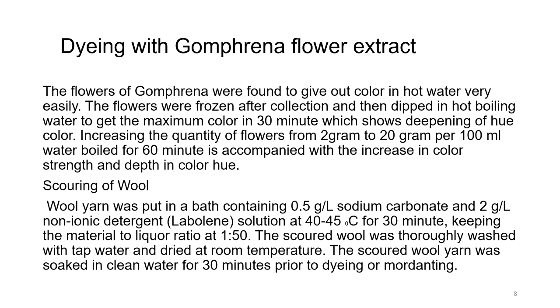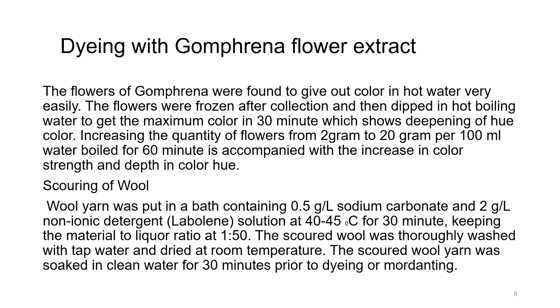Scouring of wool yarn: put in a bath containing 0.5 g/L sodium carbonate and 2 g/L non-ionic detergent (laboline solution) at 40-45°C for 30 minutes, with M:L ratio 1:50 — a fairly dilute solution. The scoured wool was thoroughly washed with tap water and dried at room temperature. The scoured wool yarn was then soaked in clean water for 30 minutes prior to dyeing or mordanting, to ensure all scouring chemicals and impurities are removed.